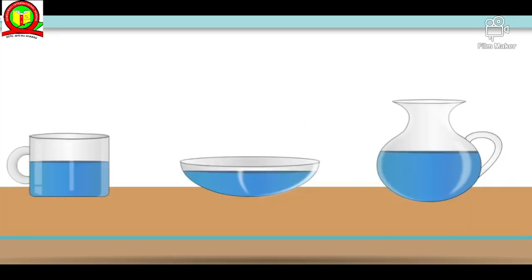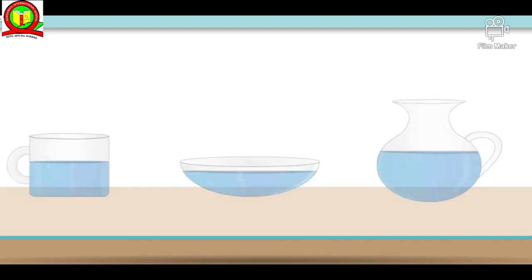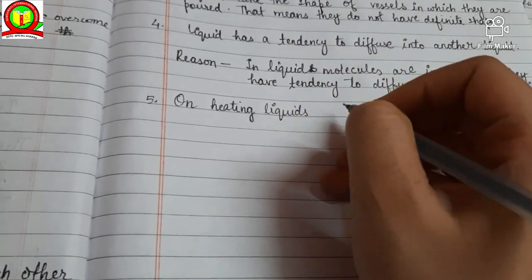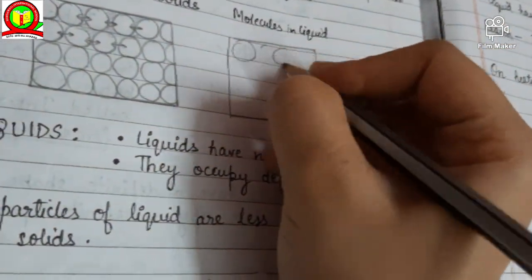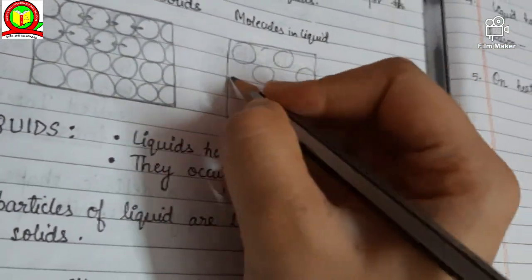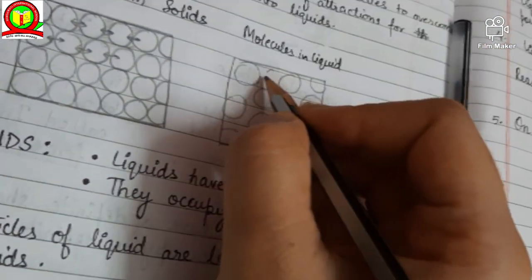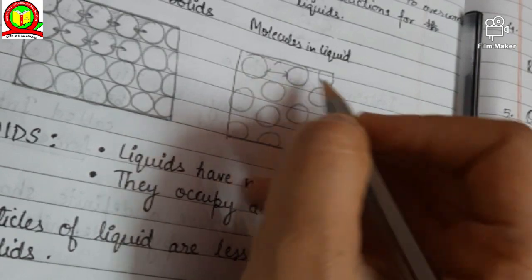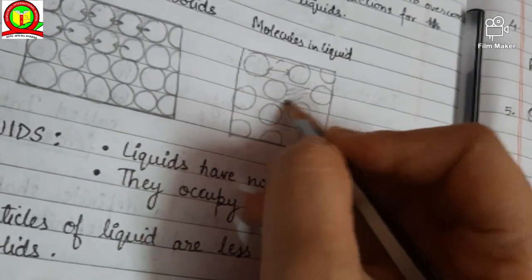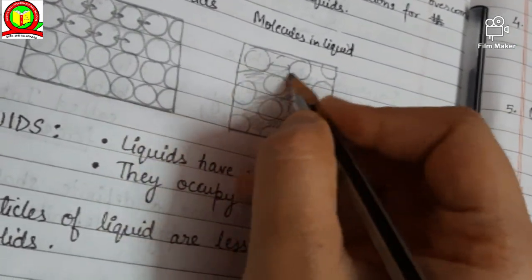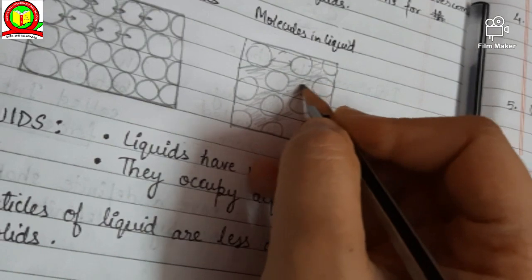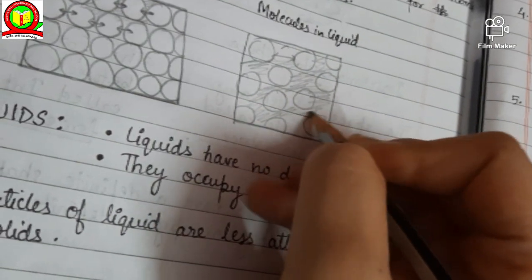The fifth and last characteristic of liquid is that on heating, liquids change into gases. Here is a diagrammatic representation of molecules in a liquid — they have more space compared to solids, and the molecular force of attraction is less compared to solids.